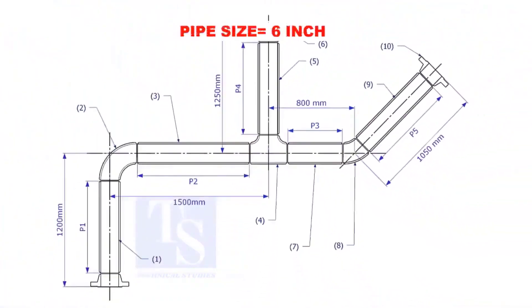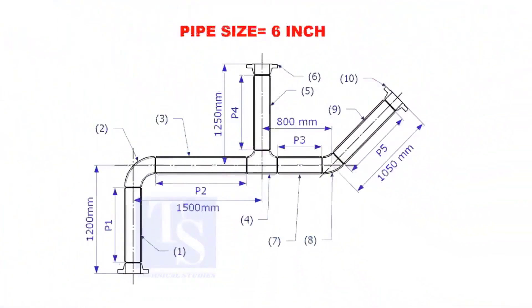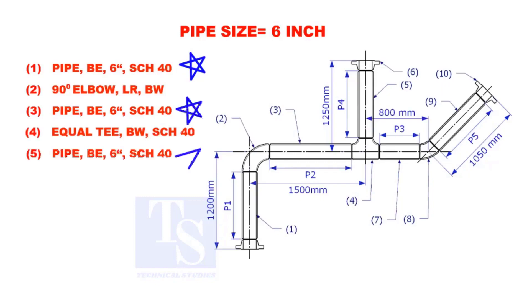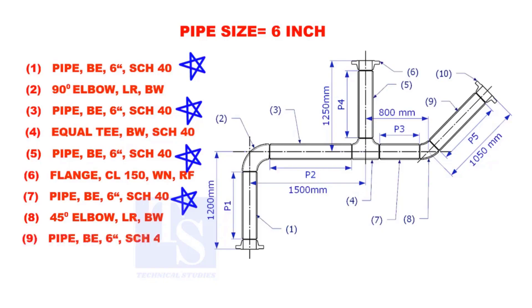Assume that the pipe size is 6 inches. Item numbers 1, 3, 5, 7, and 9 are pipes.